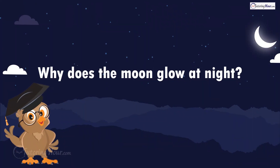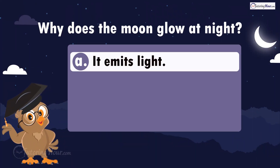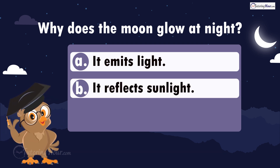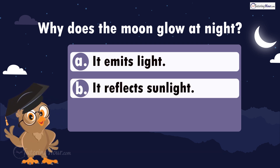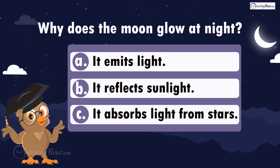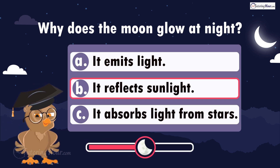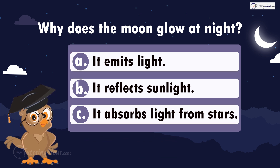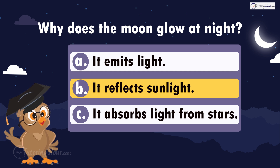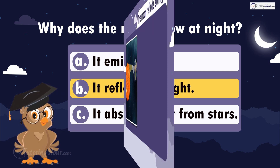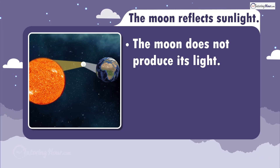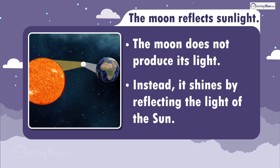Why does the moon glow at night? Is it A, it emits light; B, it reflects sunlight; or C, it absorbs light from stars? The correct answer is that the moon reflects sunlight. The moon does not produce its own light. Instead, it shines by reflecting the light of the sun.